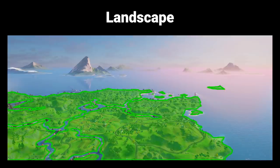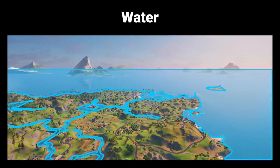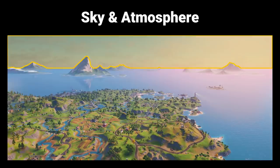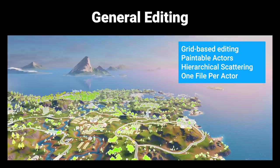The open world tools here are designed to help designers get their vision into the engine more efficiently. We'll start with a topic breakdown: landscape, including virtual texturing, the new landscape layer system, landscape splines with non-destructive editing, and custom blueprint brushes. Then we'll talk about the new water system coming in Unreal Engine 4.26, including terrain carving, fluid simulation, and gameplay interaction. Next, we'll cover the Sky Atmosphere component from 4.24 and a preview of volumetric clouds in 4.26. Finally, we'll discuss general editing tools — placing objects, roads, buildings, and streaming. Some tools are available today and others are still work in progress.